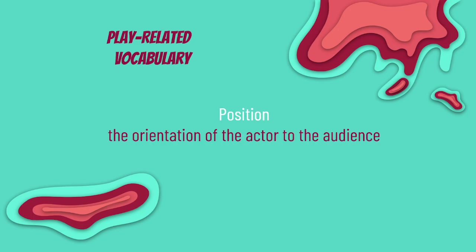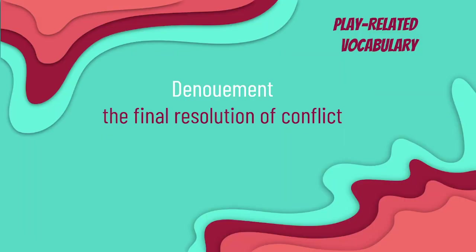Position — the orientation of the actor to the audience. Stage positions are used to help keep track of how performers and set pieces move during rehearsal and performance. Denouement — the final resolution of conflict. The denouement is the final outcome of the story, generally occurring after the climax of the plot. Often it is where secrets, if there are any, are revealed and loose ends are tied up. As a writer, it's important to keep this in mind when crafting your own story.